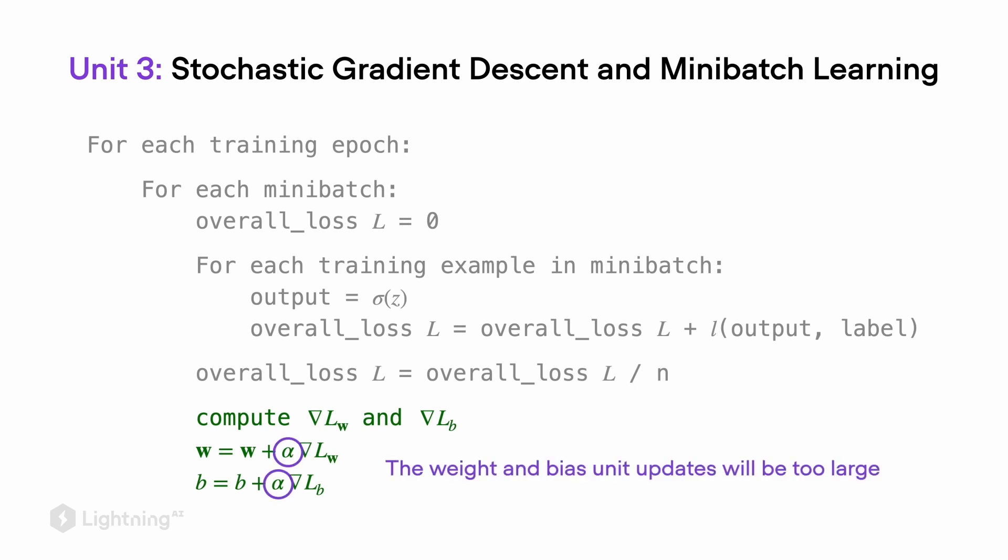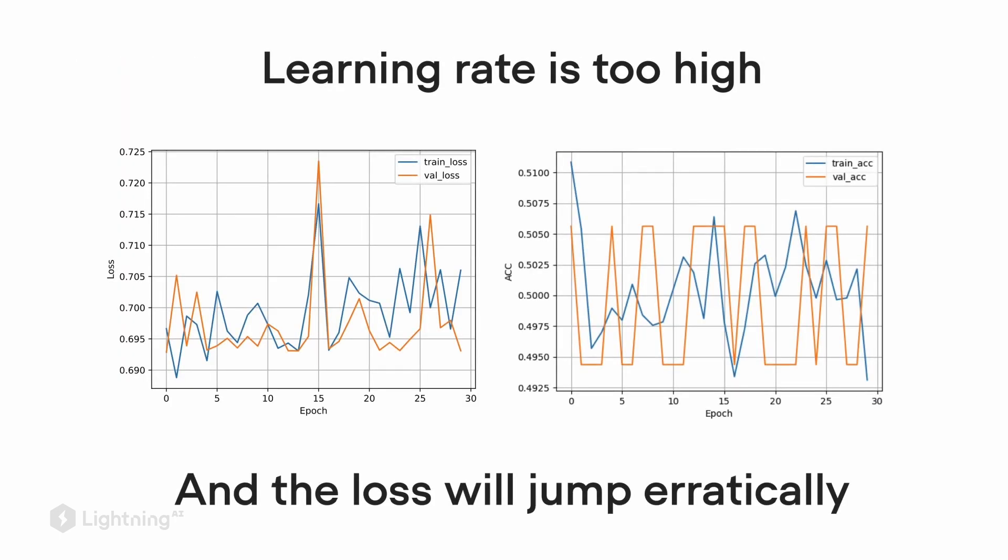If we have a learning rate that is too large, we will update the weights too much. We will overshoot, and the same will happen for the bias unit here. So if the learning rate is too large, we will see the loss jumping around a lot, and we will see that the network is not learning anything useful, because it's just overshooting the ideal or optimal values.